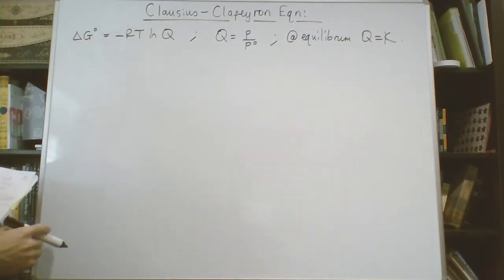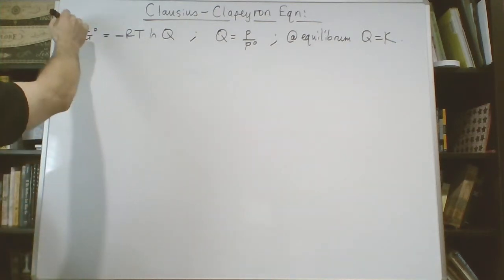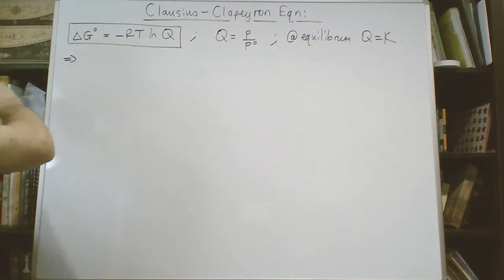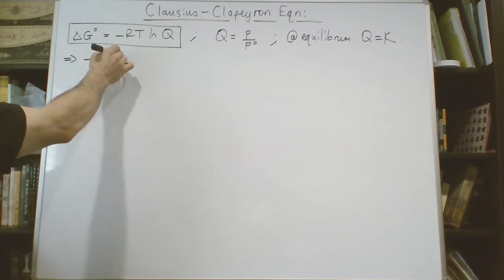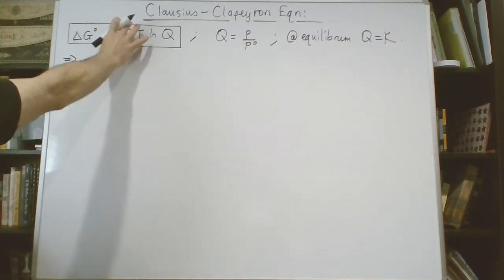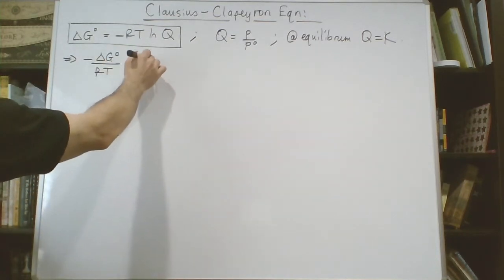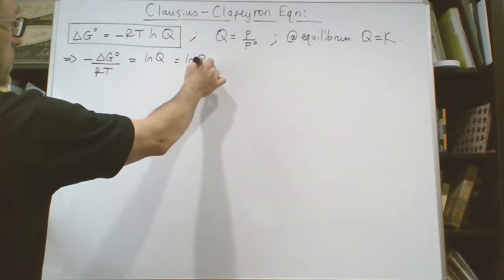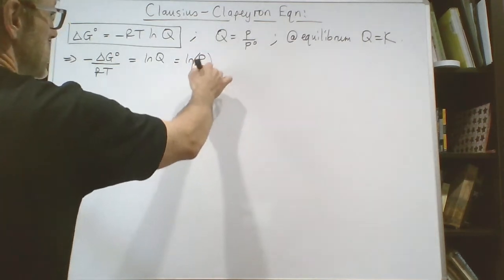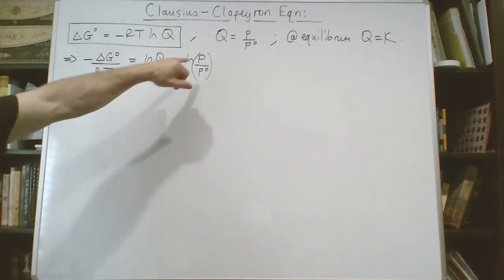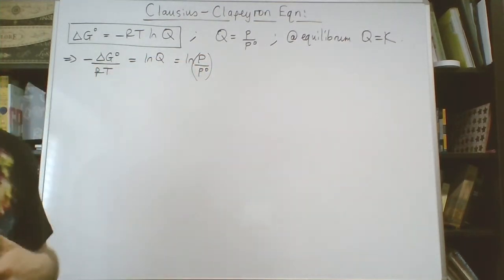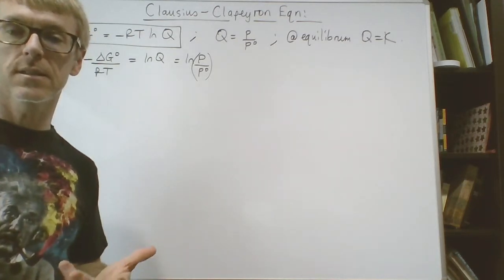We're going to start rephrasing this equation a little bit, breaking it down. If we take this equation, we'll start with minus ΔG° divided by RT. We can take RT over, so we get RT times log Q, which is equal to log(p/p°), where p is pressure under non-standard conditions divided by pressure under standard conditions.